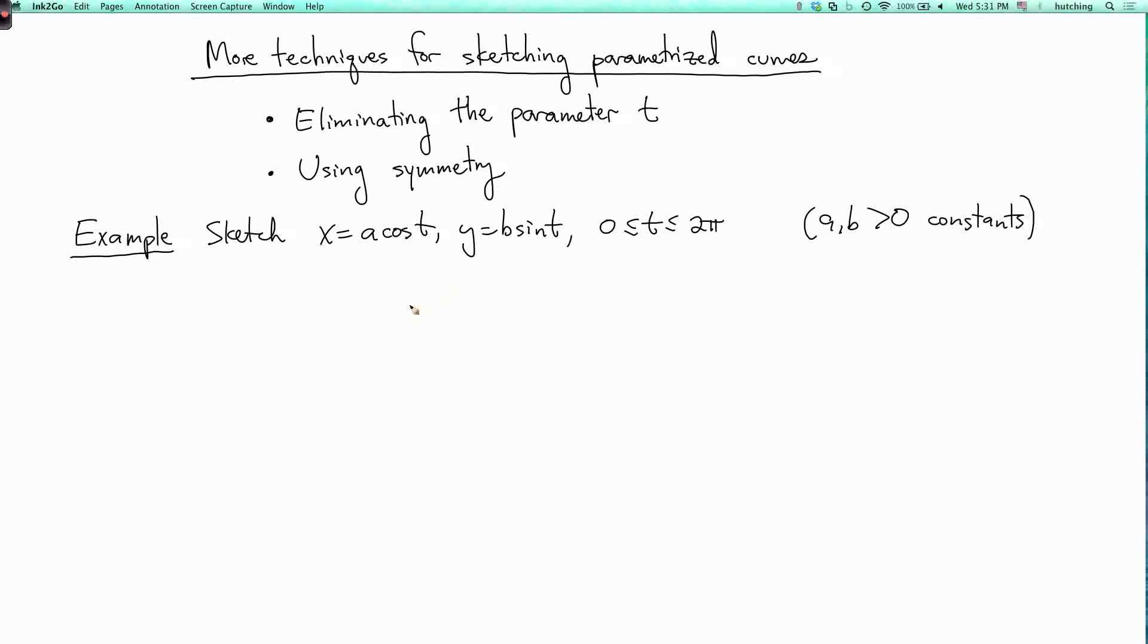Well, I see cosine and sine, so I want to use my favorite trig identity, which is cosine squared plus sine squared equals 1. So to get that identity, I take x over a, which is cosine of t, and square it, and then I add y over b, which is cosine of t, excuse me, sine t, squared, and that has to equal 1. So every point on the curve must satisfy this equation.